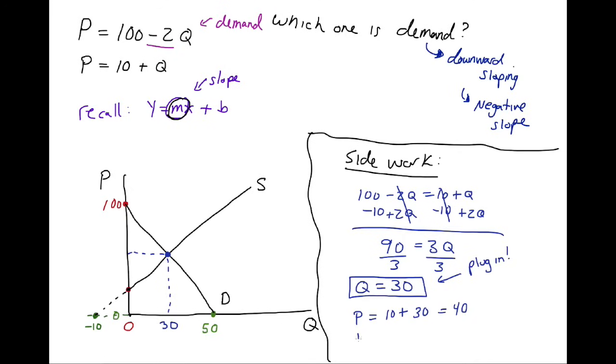Now just for practice, I'm going to also plug it into demand, which is going to equal 100 minus 2 times 30, which is 60, which equals 40. So you can see how they are equal. It's 40 or it's 40. So that must mean that P equals 40. So this is 40.